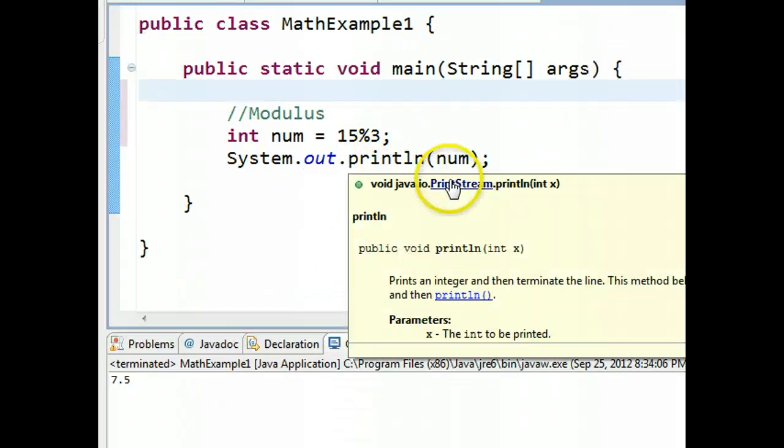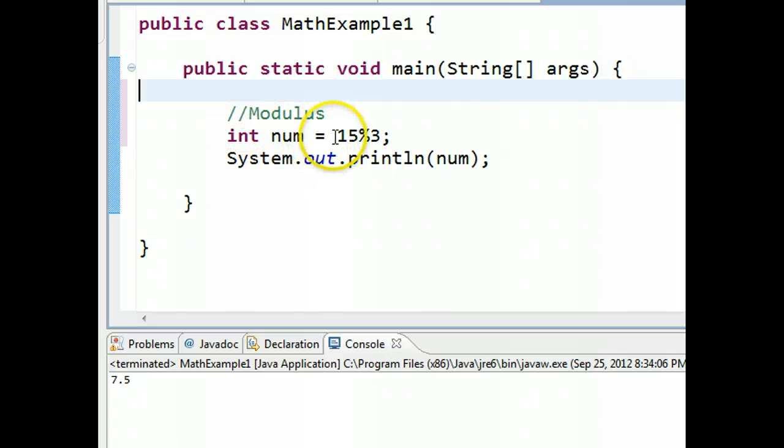We have it right here. We have an integer called num, and it's equal to 15 mod 3. So if I run this, I get num as a value of 0. If I try 16 mod 3 and I run this, I get a value of 1. And again, our value is showing up down here in the console.